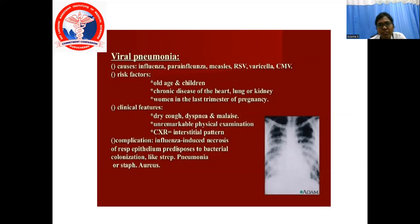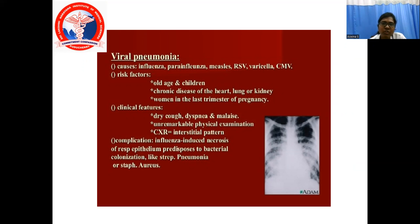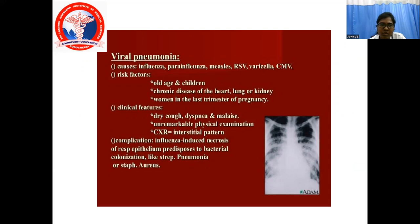Viral pneumonia: the most important causes are influenza, para-influenza, measles, respiratory syncytial virus, varicella, and cytomegalovirus. Risk factors for viral pneumonia include old age and children, chronic disease of the heart, lung, or kidney, and women in the last trimester of pregnancy. Clinical features include dry cough, dyspnea and malaise, unremarkable physical examination findings, and chest X-ray showing an interstitial pattern. A complication is that influenza-induced necrosis of the respiratory epithelium predisposes to secondary bacterial colonization.